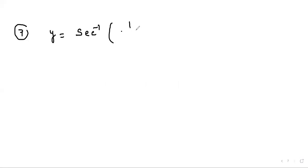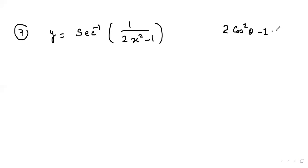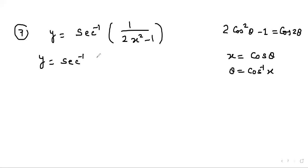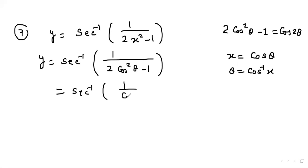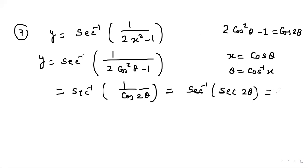Question 7: y = sin⁻¹(1/(2x² − 1)). To simplify the bracketed term we use the identity 2 cos² θ − 1 = cos 2θ, so we put x = cos θ, giving θ = cos⁻¹ x. Substituting, y = sin⁻¹(1/(2 cos² θ − 1)) = sin⁻¹(1/cos 2θ), which equals sin⁻¹(sin 2θ) = 2θ.